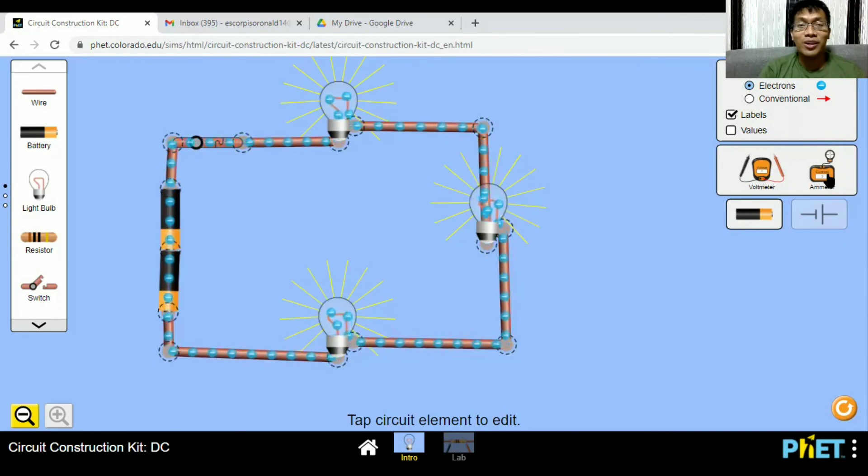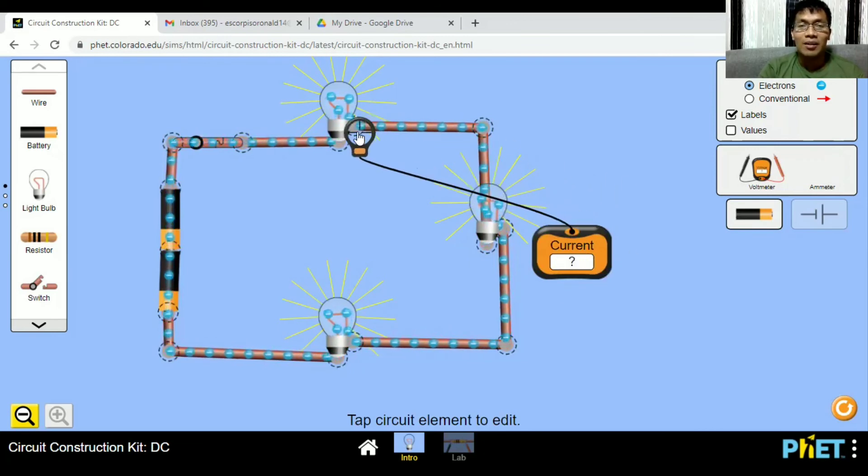Let's try to measure the current passing through each component by using an ammeter. Let's put it here. So as you see, it is 0.60. When I move to the next bulb, it is 0.60. And still, it's 0.60.